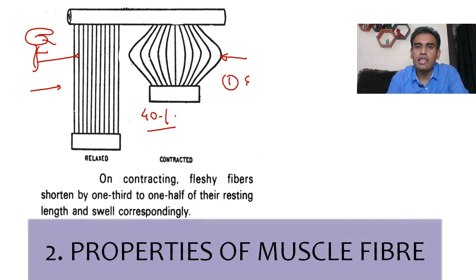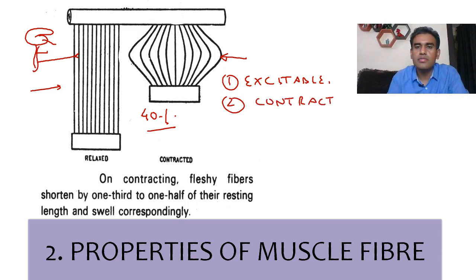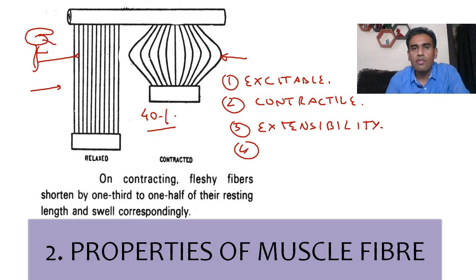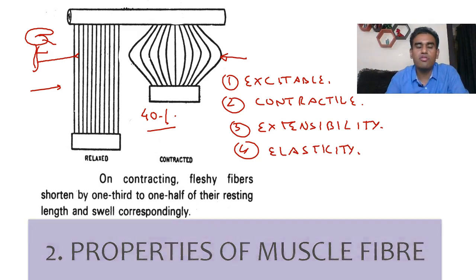The properties of muscle fibers are: first, they are excitable — excitable with the help of nerves. Second, after being excited, they are contractile. Third, imagine a group of muscles contracting and performing a movement — the opposite antagonist muscles will extend and stretch. So the other property of muscle fibers is extensibility. And imagine after a muscle has contracted or extended, it will try to return to its original length — therefore it needs to have elasticity. These are the properties of muscle fiber.